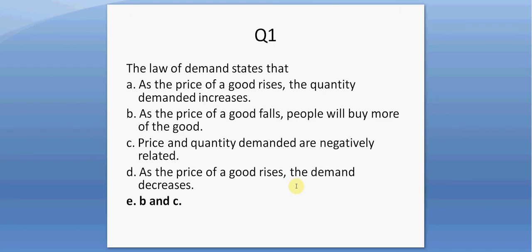The law of demand states that B, as the price of a good falls, people will buy more of the good, and C, price and quantity demanded are negatively related. D is incorrect — as the price of a good rises, the demand decreases is wrong because when demand decreases, we're talking about the curve shifting to the left. Law of demand states as the price goes up or down, we're just moving along the demand curve. For D to be correct, it should state the quantity demanded decreases.